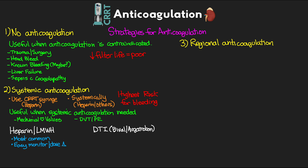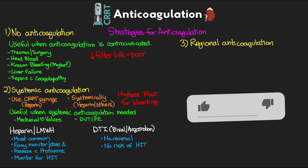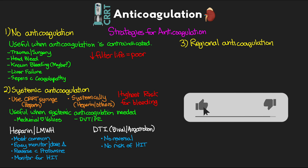Heparin is the most commonly used and has the ease of monitoring and dosage adjustments. It is easy to reverse with protamine, but we do need to monitor these patients for HIT, and if their platelets start falling we're going to need to stop it. For direct thrombin inhibitors, there are no reversal agents — FFP, cryo, and other clotting factors can be helpful — but there is no risk for HIT.